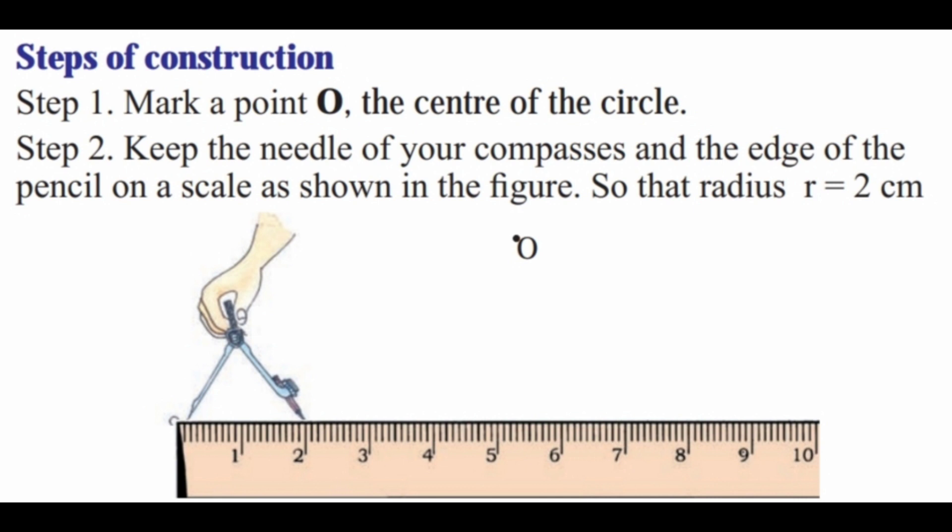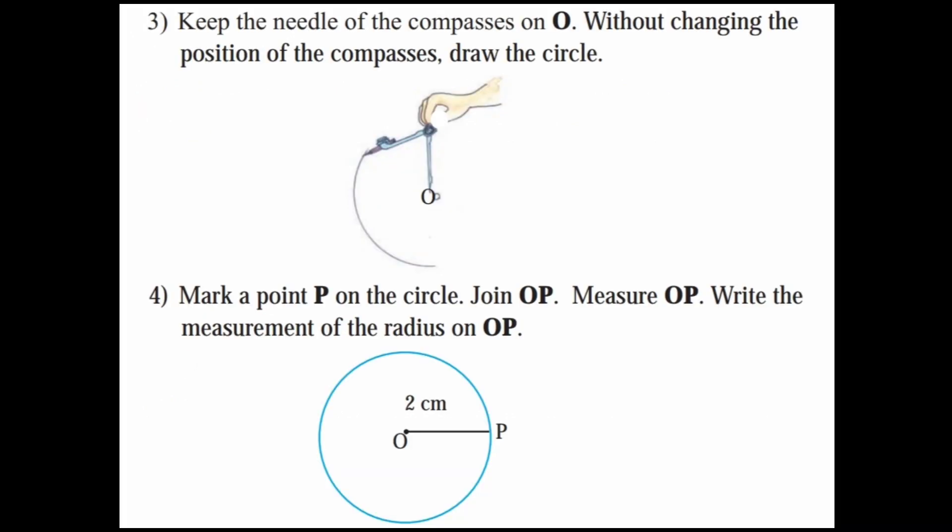Next, Step 3: Keep the needle of the compasses on O. Without changing the position of the compasses, draw the circle. Step 4: Mark a point P on the circle. Join OP. Measure OP. Write the measurement of the radius on OP. The radius will be 2 cm.